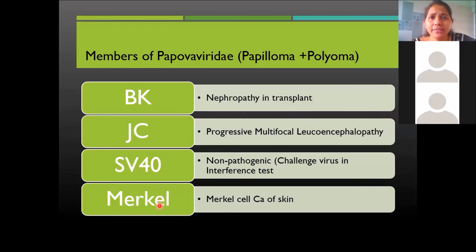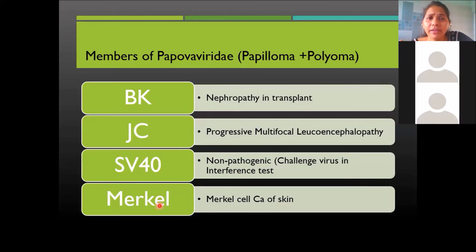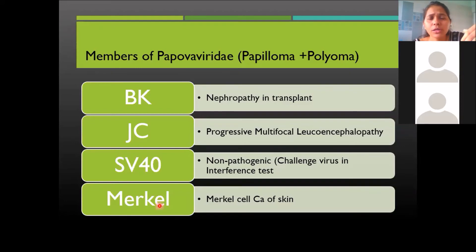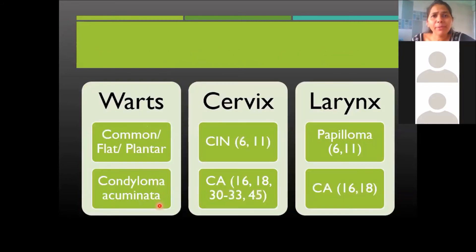Remember that BK, JC, SV40, Merkel, and HPV are all DNA viruses. If asked which of the following is not a DNA virus, also remember CMV, EBV, Variola, Vaccinia, and Molluscum Contagiosum are all DNA viruses. Now, what does Papillomavirus lead to? It leads to warts.